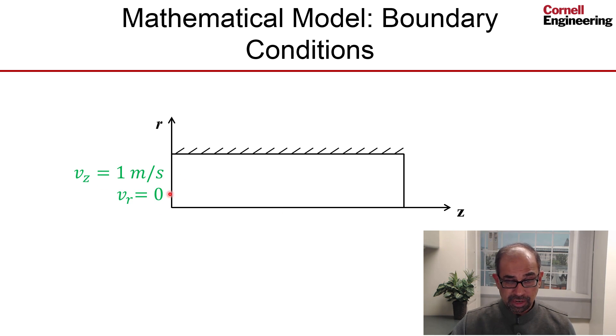This is the boundary where we have the flow coming in with uniform velocity, so the axial component of the velocity we'll set to one meter per second, and the radial component to be zero.